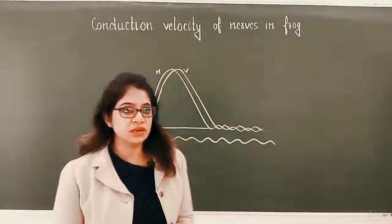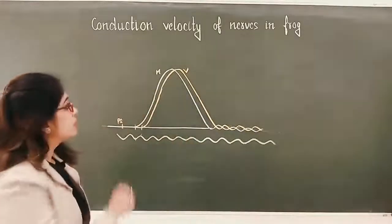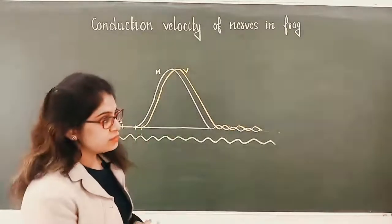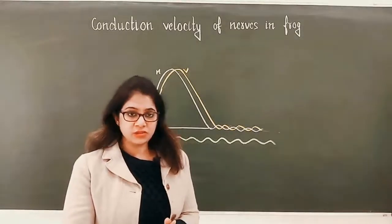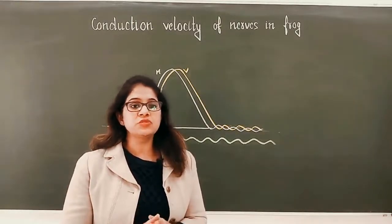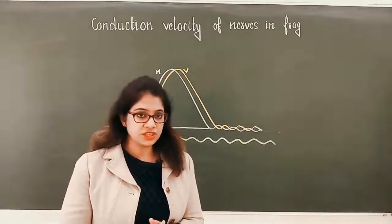Next, the graph you can get in your exam is the conduction velocity of nerves in the frog. Most of the time, this is the sciatic nerve because we take out the gastrocnemius muscle and sciatic nerve preparation.